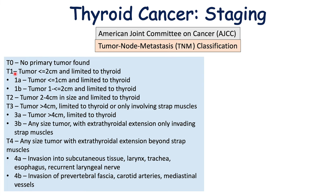For the tumor (T) component: T0 is no primary tumor found. T1 is a tumor less than or equal to 2 centimeters limited to the thyroid. T2 is a tumor of 2 to 4 centimeters, also limited to the thyroid. T3 is a tumor greater than 4 centimeters limited to the thyroid or only involving strap muscles — the infrahyoid muscles in the neck. T4 is any size tumor with extrathyroidal extension beyond the strap muscles.